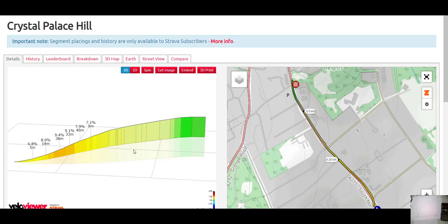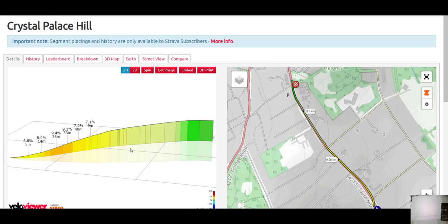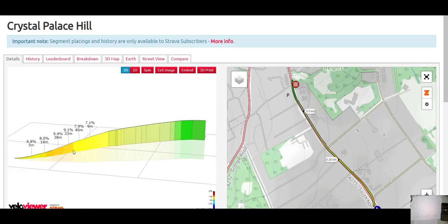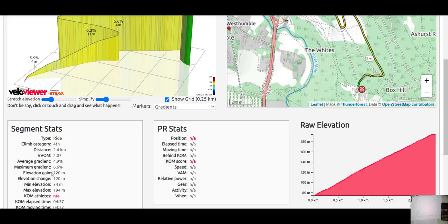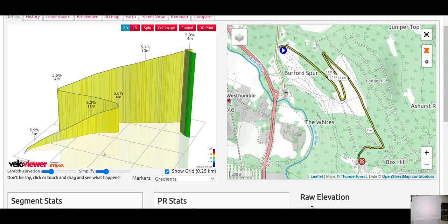Okay, so here's Crystal Palace in its profile view. So most of the action happens early on, 6%, 7%, maximum 9.4% for about 40 meters. The rest of this part here, if you average it overall, it becomes 5%.